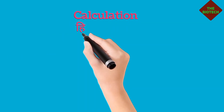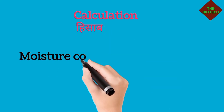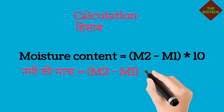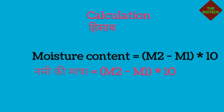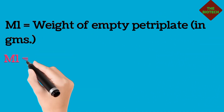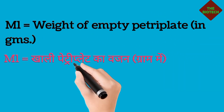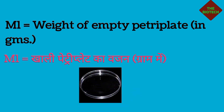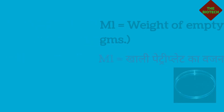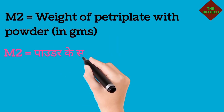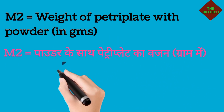Calculation. Moisture content is equal to M2 minus M1 into 10. M1 is equal to weight of empty petri plate. M2 is equal to weight of petri plate with powder.